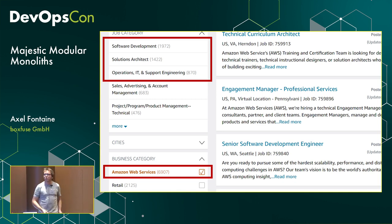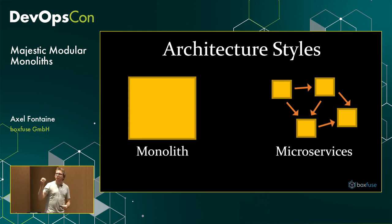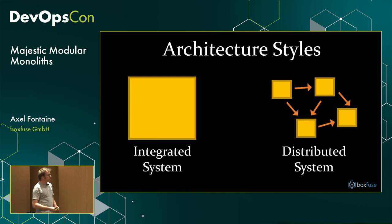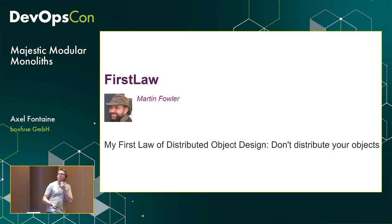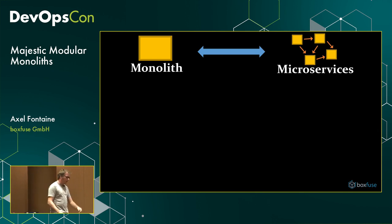The first thing we should do is remove the emotional component from the nomenclature of these two architecture styles and start talking about integrated systems and distributed systems, because that's really what they are. Distributed — have you heard that somewhere before? Martin Fowler had something to say about it: 'My first law of distributed object design: don't distribute your objects.'